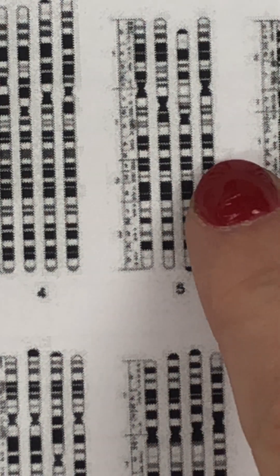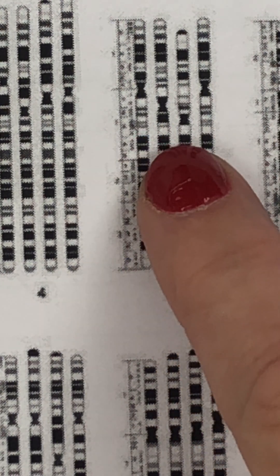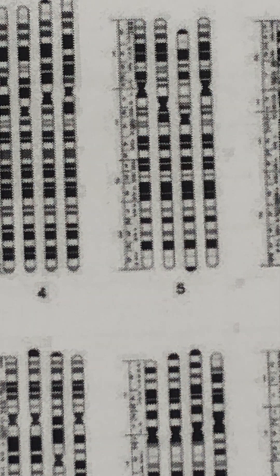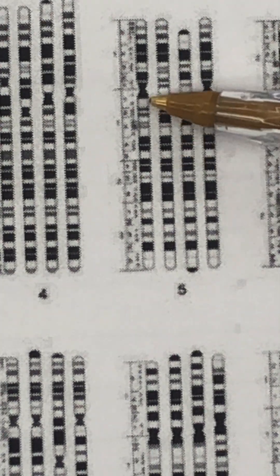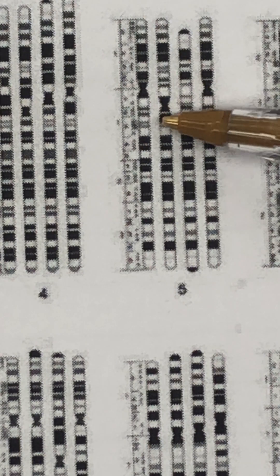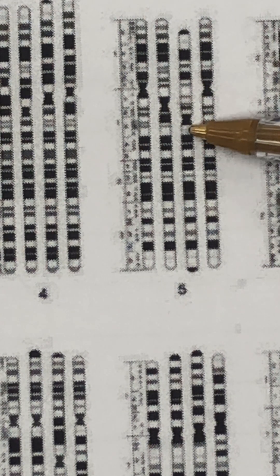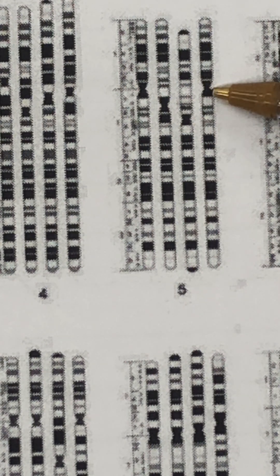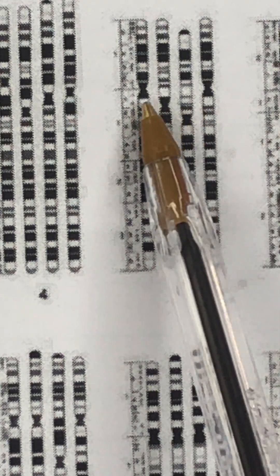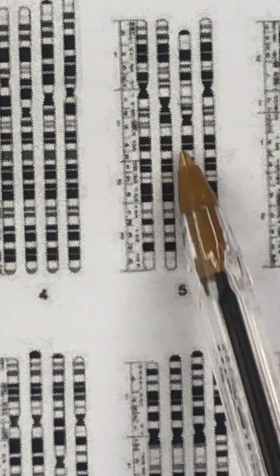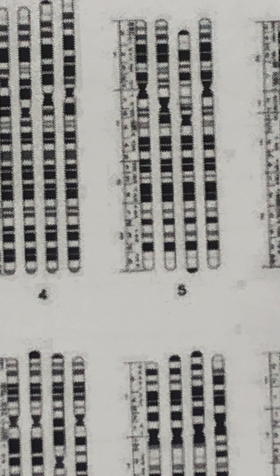You can see in just this section alone, you can see the centromere where the left and right sister chromatids bind. This one's up higher, this one's a little lower, a little bit lower, much higher. So some of these look just like each other, these two look really close, and then some look a little unique.